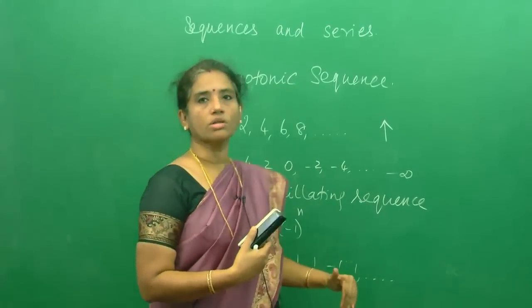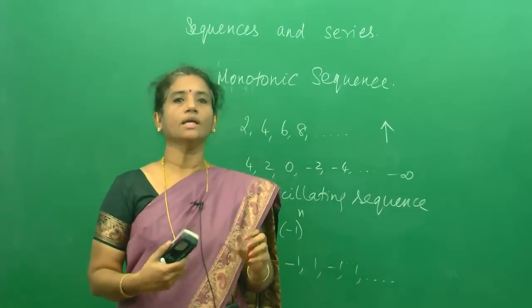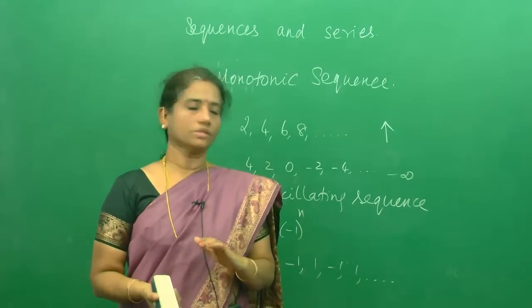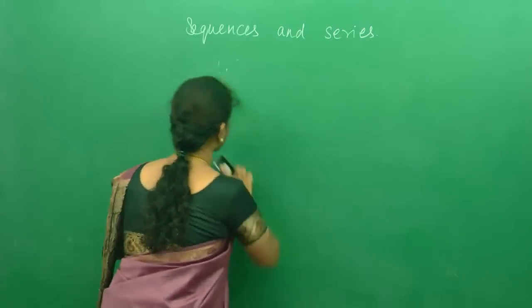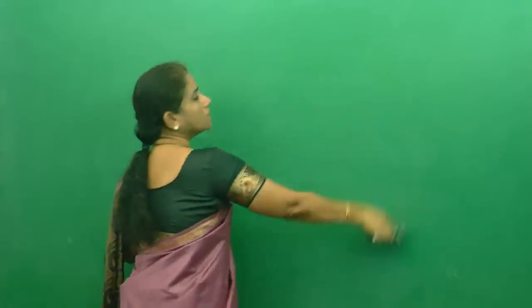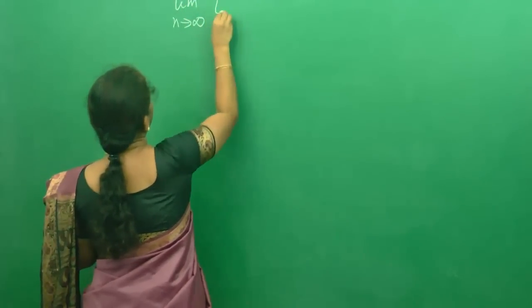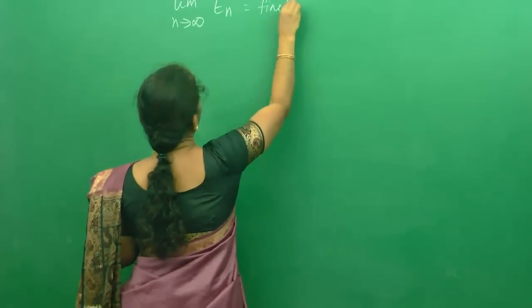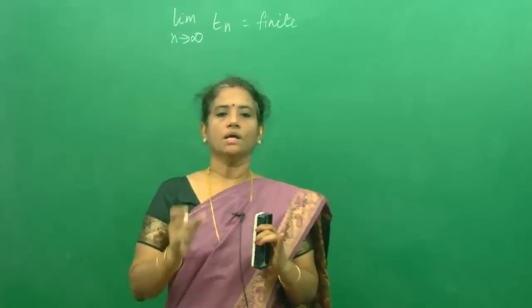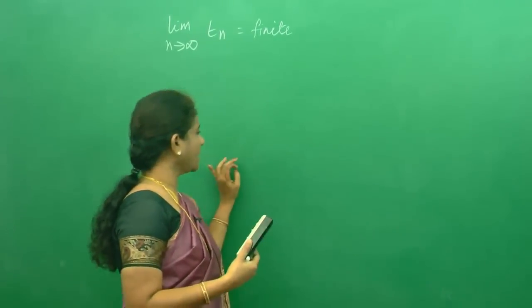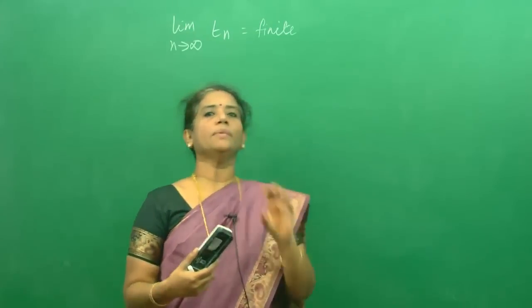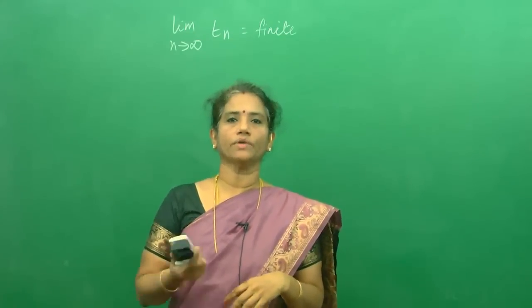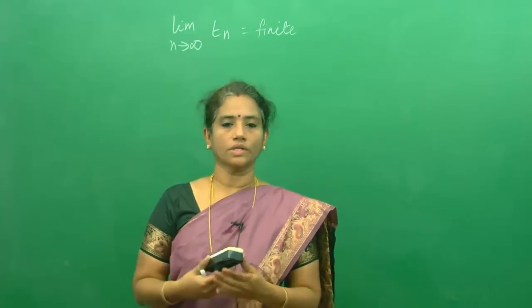After knowing the concept of all the sequences, we are going to find out specifically how to determine whether a sequence is converging or diverging. The first important rule is: if the limit as n tends to infinity of the nth term of a sequence is finite, we say the sequence is convergent. The nth term should be finite — that's what we have been explaining.